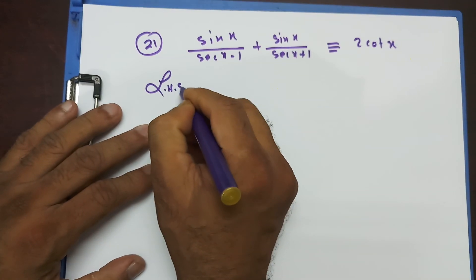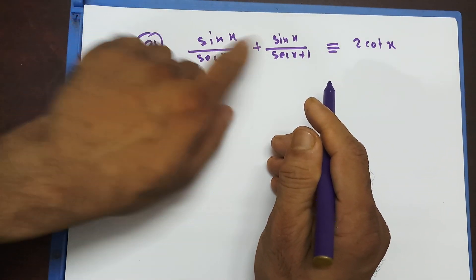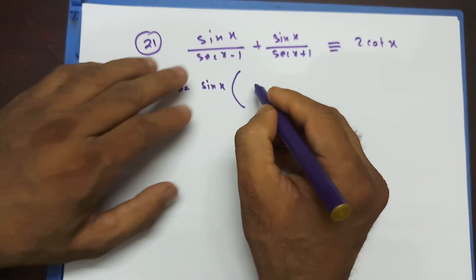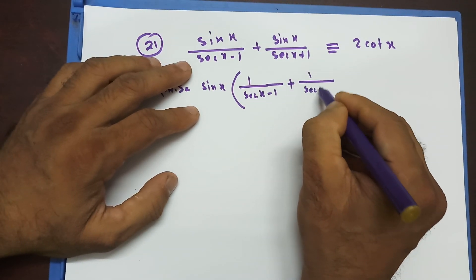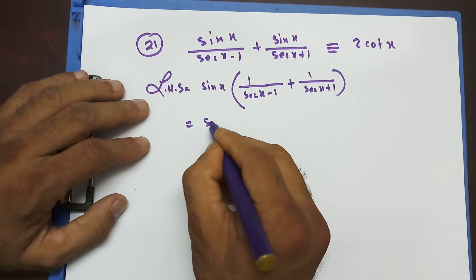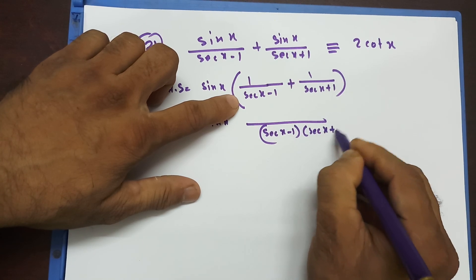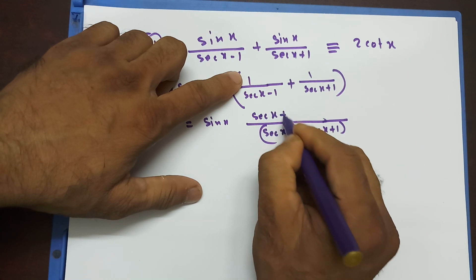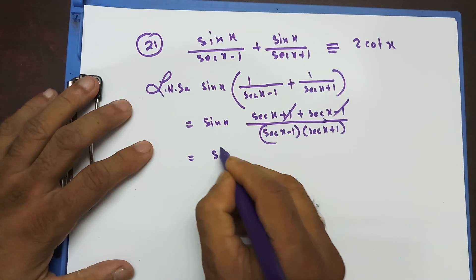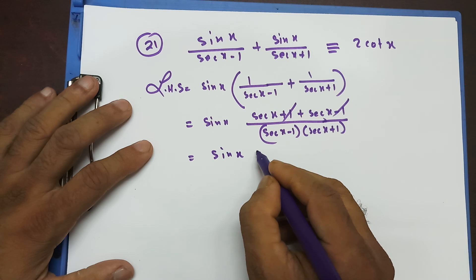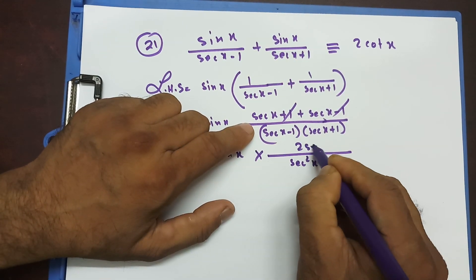Again, left-hand side. In the numerator I have the same sinx, so if I take sinx common, my life would be a lot easier. On the top I have 1/(secx - 1) + 1/(secx + 1). Taking the LCM of (secx - 1)(secx + 1), on the top I write secx + 1 plus secx - 1. These cross out to give sinx times 2secx over sec²x minus 1.